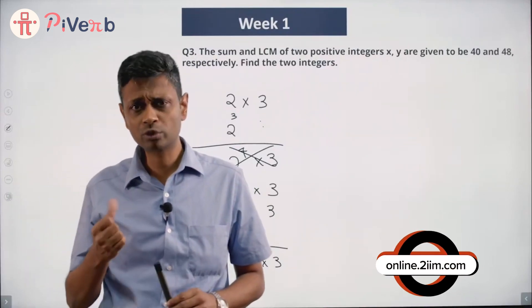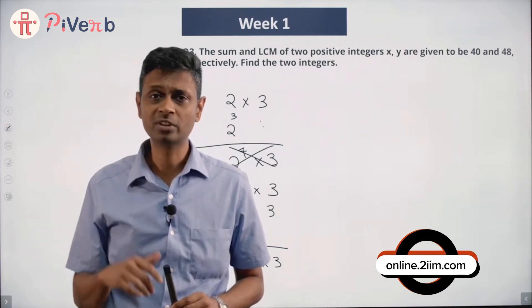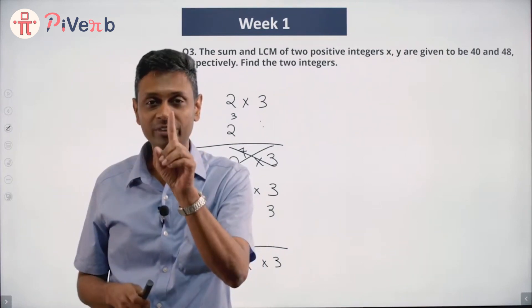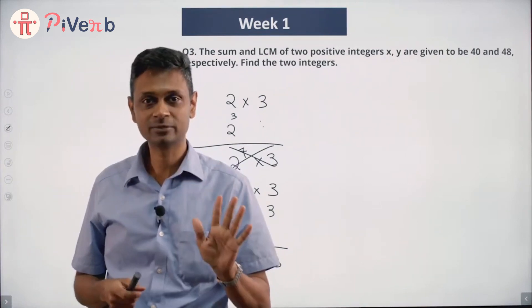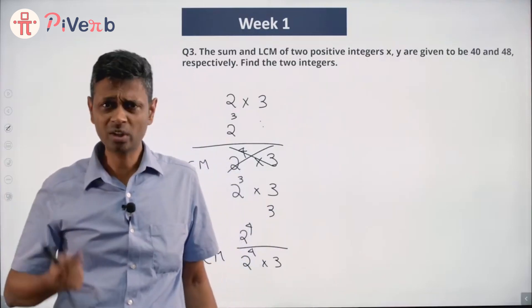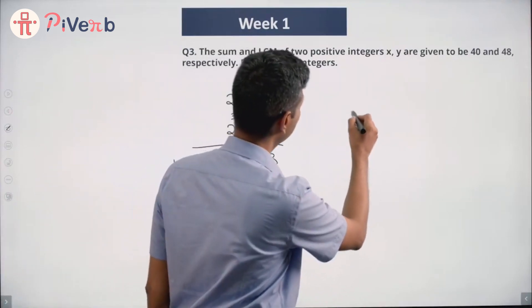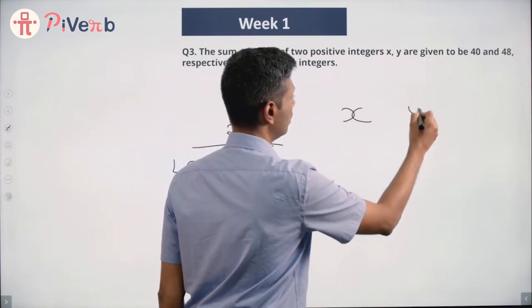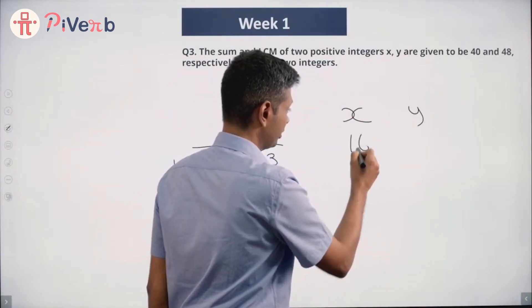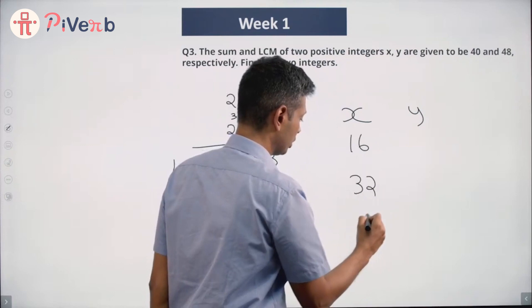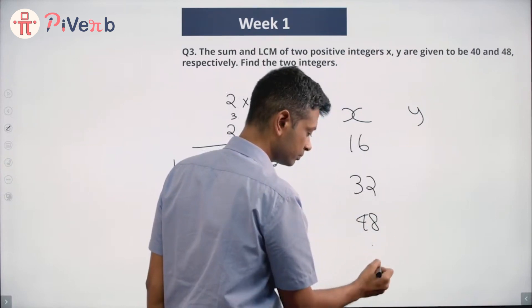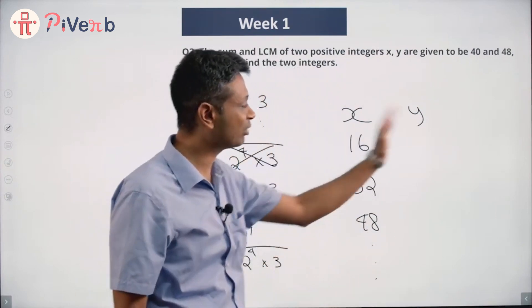What is 2 to the power 4? 2 to the power 4 is 2 into 2 into 2 into 2, which is 16. Or one of the numbers is a multiple of 16. So one of the numbers is a multiple of 16. If I have the two numbers x and y, one of the numbers could be 16, it could be 32, it could be 48, and then the other number we need to think about.